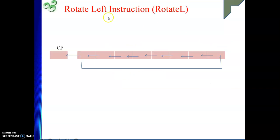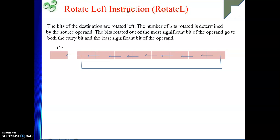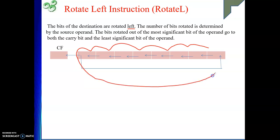The first one is the rotate left instruction. The mnemonic is Rotate L. In the rotate left instruction, we rotate the content of our operand — the bits of the destination are rotated left. We will be rotating to the left, and whosoever bit is going out will take the position of the vacated bit.